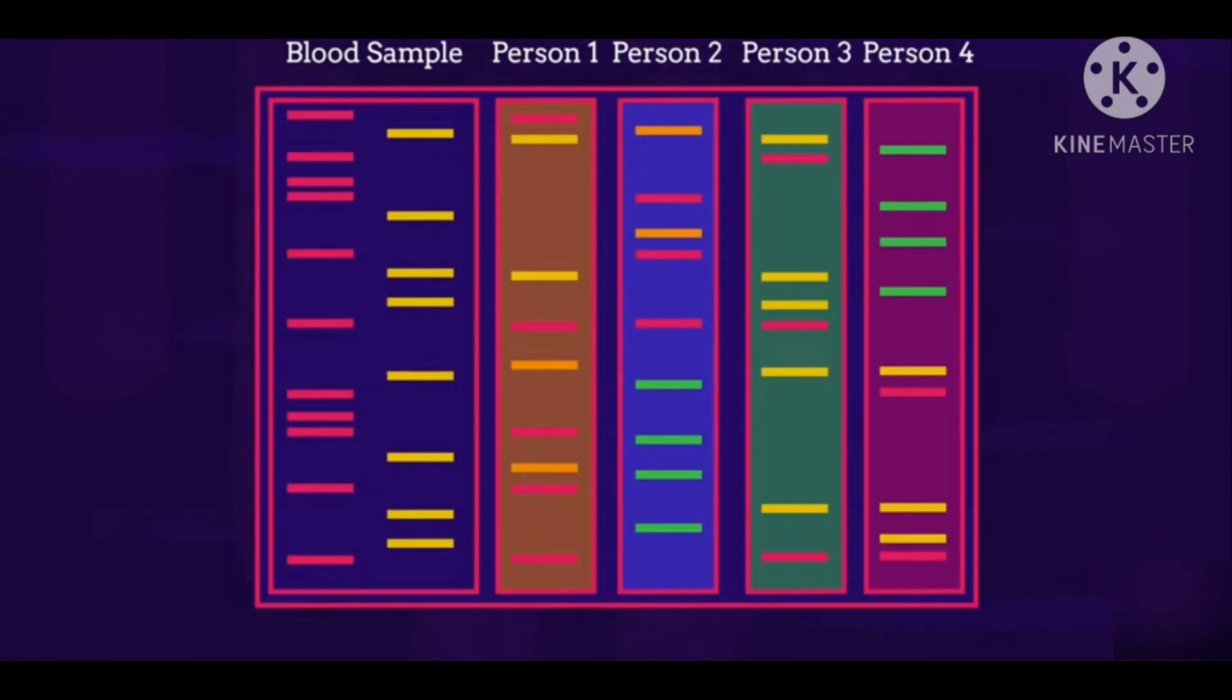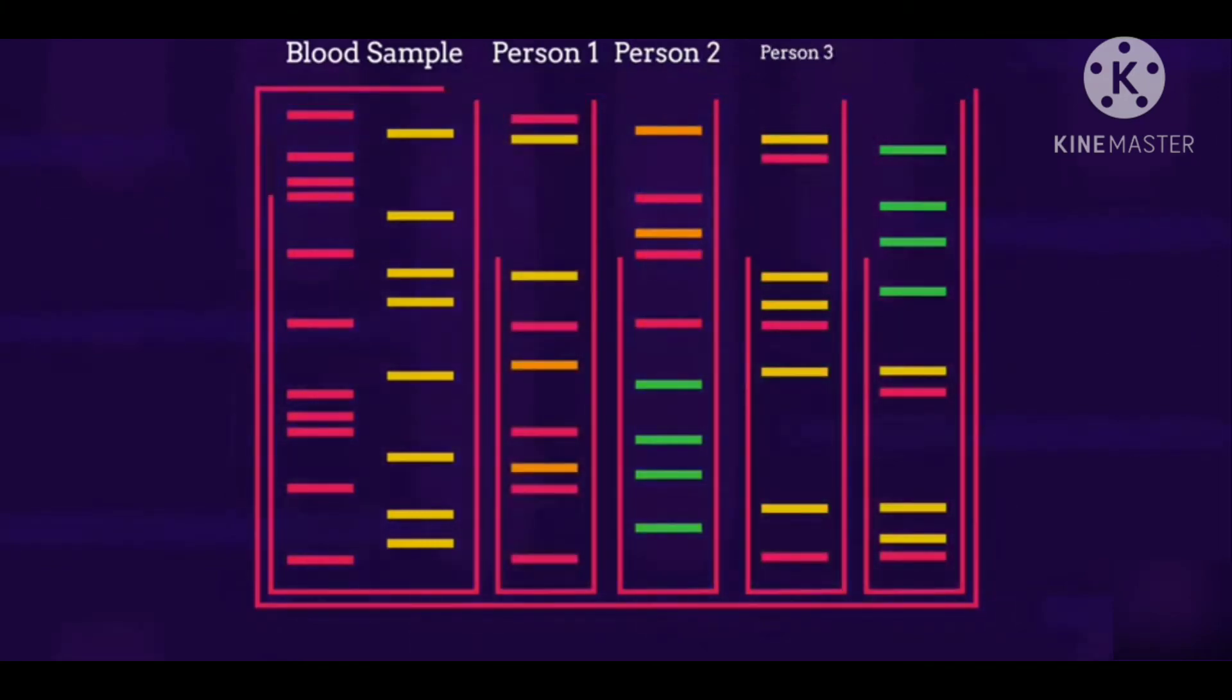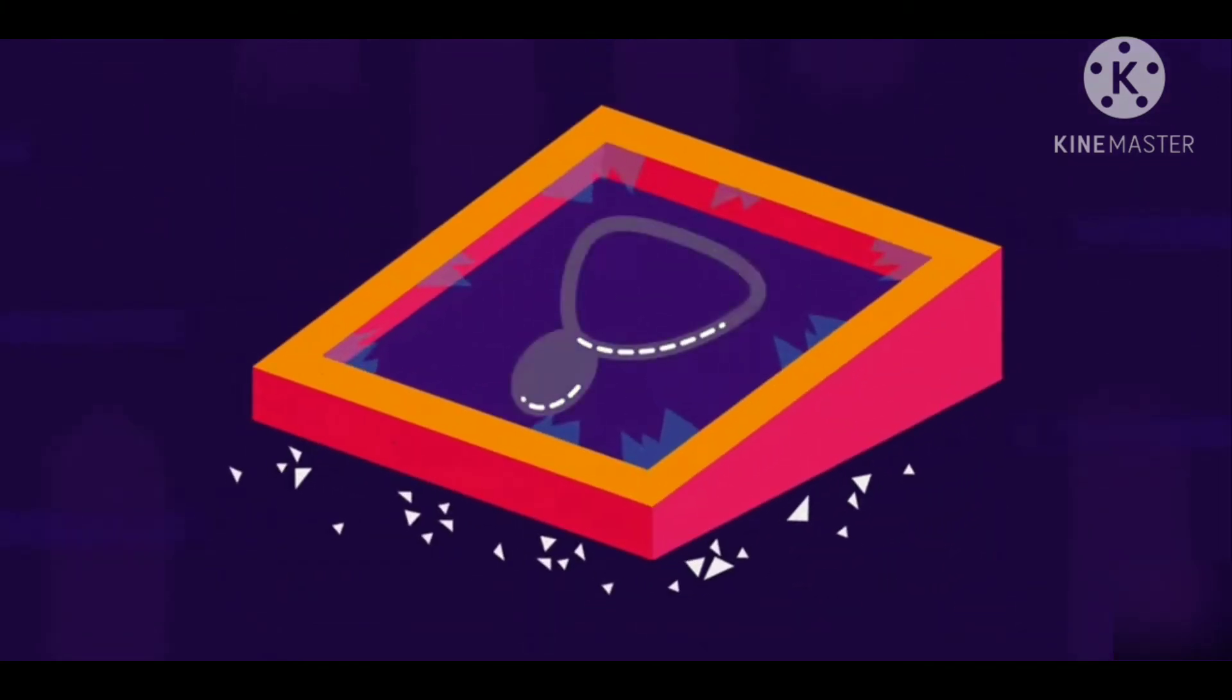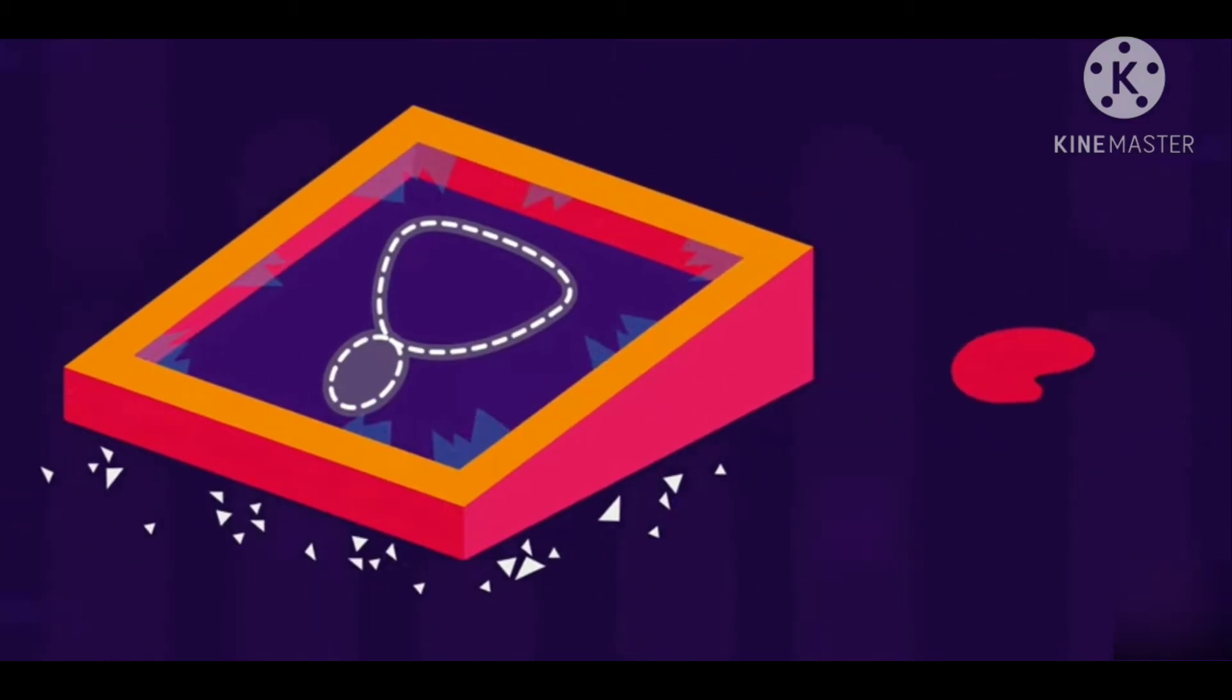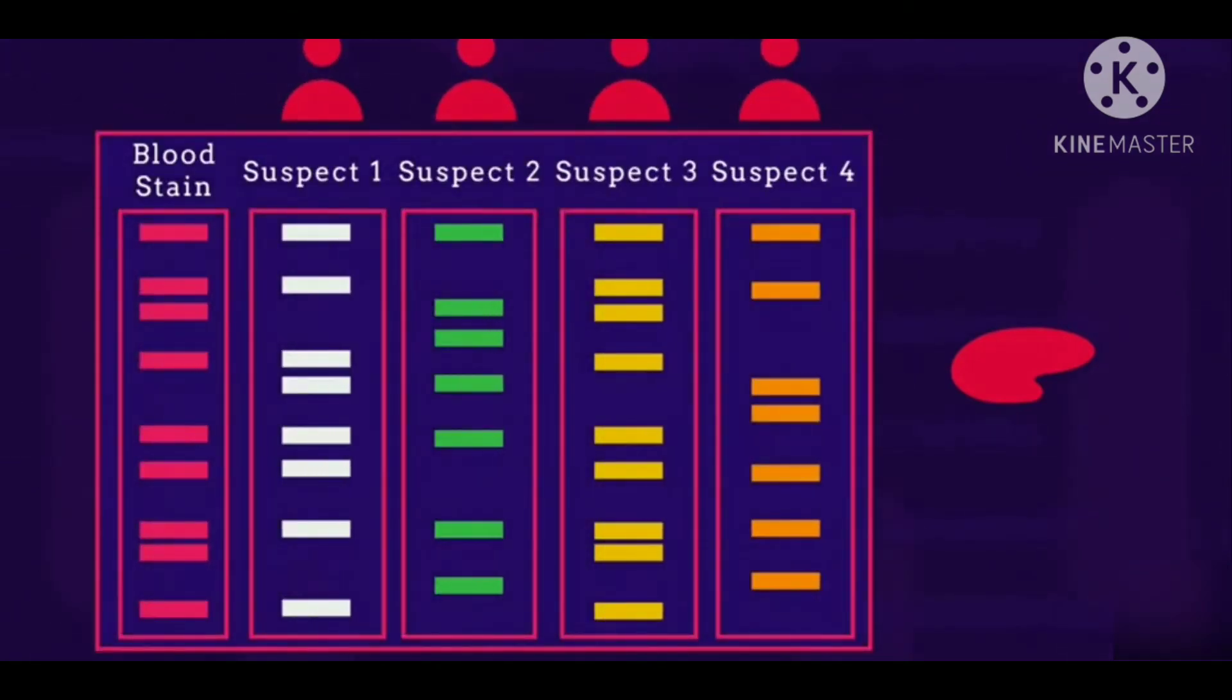So let's have a go at using DNA profiles to solve some mysteries. An item was stolen in a burglary. A drop of blood was left behind by the thief. Samples of DNA were taken from 4 suspects and compared to the sample left at the crime scene. Which suspect is guilty? Here's a clue. Look for the one that is most similar to the one from the crime scene. Pause the video while you decide.